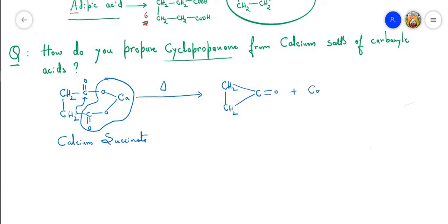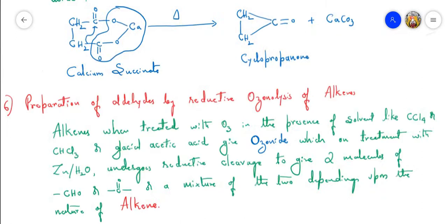The product is cyclopropenone. Next, we have the sixth method of preparation of aldehydes — that is aldehydes by reductive ozonolysis of alkenes.